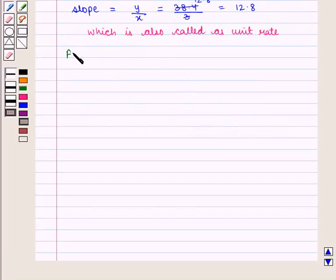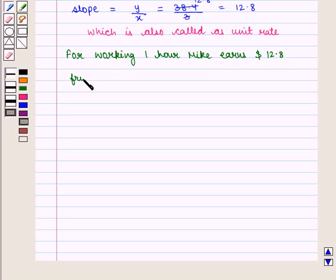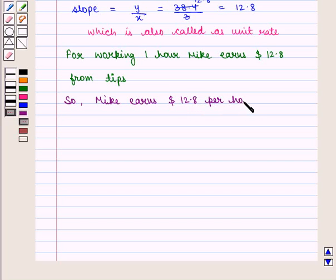It means for waiting 1 hour, he earns 12.8 dollars from tips. So we can say Mike earns 12.8 dollars per hour from tips, which is the required answer.